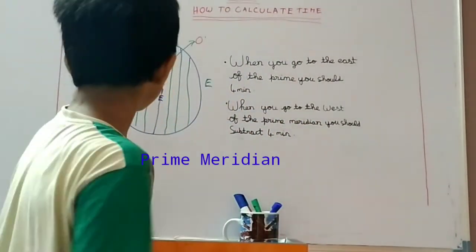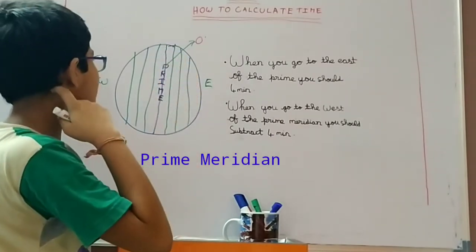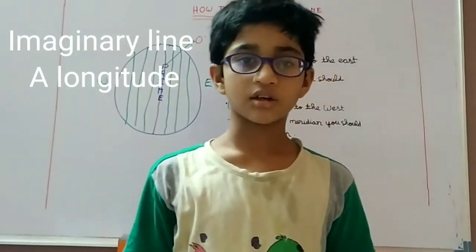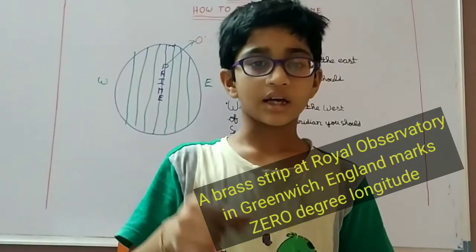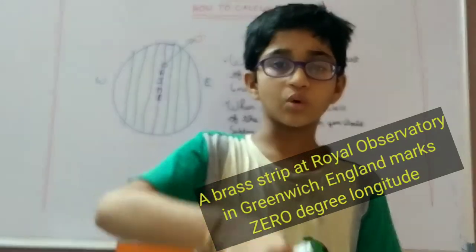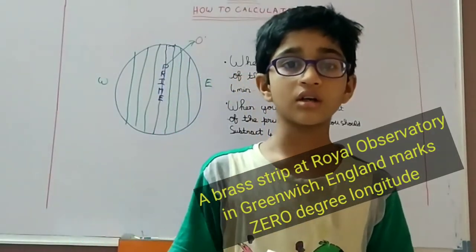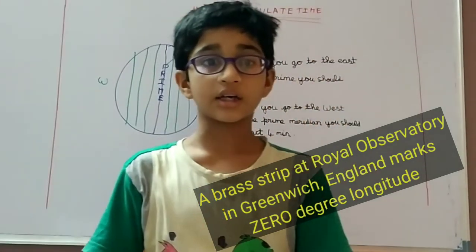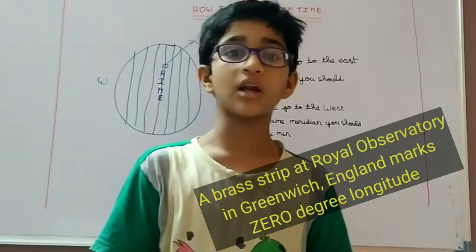So this is the prime meridian. Prime meridian has many lines and it is a longitude. It is zero degrees and it goes to South London at Greenwich to Royal Observatory.